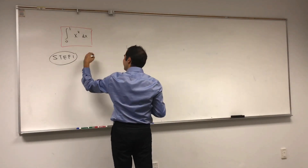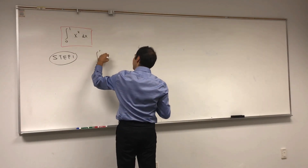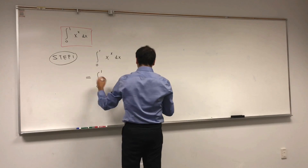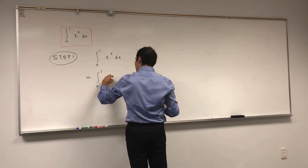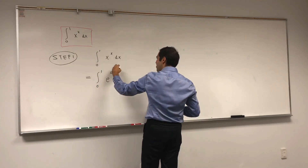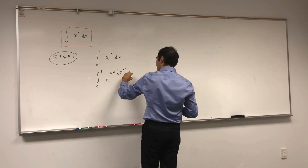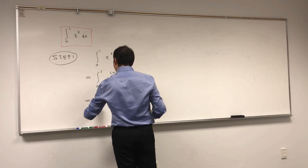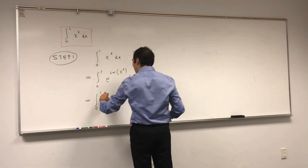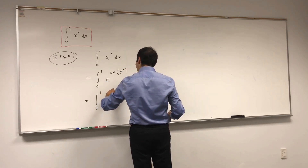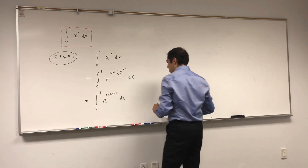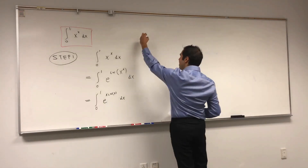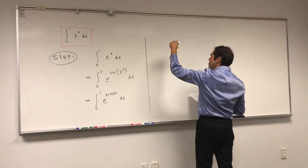Step one: let's write x to the x as an exponential function. The integral from zero to one of x to the x dx equals the integral from zero to one of e to the ln of x to the x dx. Remember, something to the something is e to the ln of that something, and ln destroys the powers, so we have e to the x ln of x dx. And as I said, we'd like to write this as a series, and we do know that e to the x can be written as a series.